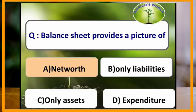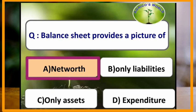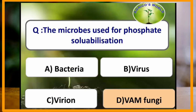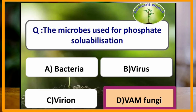Balance sheet provides a picture of which of the following? Balance sheet provides a picture of total net worth. The microbe used for phosphate solubilization is vesicular arbuscular mycorrhizal fungi. VAM fungi is used for phosphate solubilization.